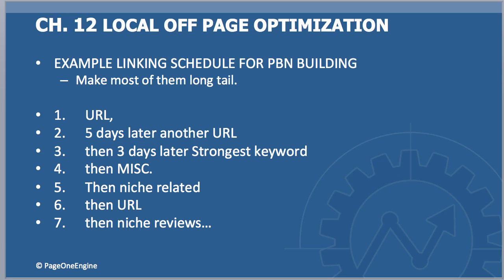Here's an example of a linking schedule for a PBN build. On day one, put a URL anchor; five days later, throw in another URL anchor; three days later, put in your main keyword like 'city plumber'; wait a couple days, then throw in something like 'this is a good plumber' as a miscellaneous anchor. A couple more days later, add something niche-related like 'drain cleaning in city'; then a couple days after that, drop in another URL anchor where the keyword is in the URL. Finally, throw in something like 'plumber reviews' or 'check out this new plumber.' That's how I would build out PBN links for one digital asset.